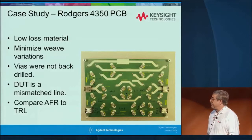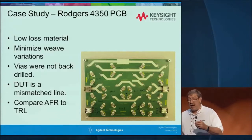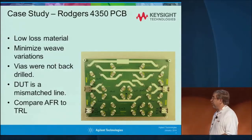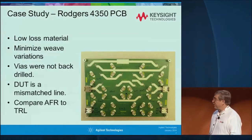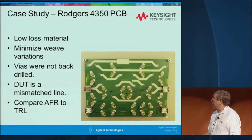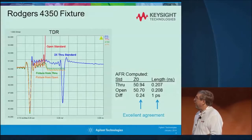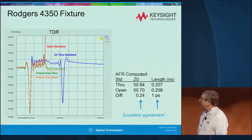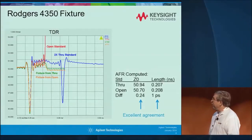Our device under test was a mismatched line. We had a TRL cal kit on here — both a single-ended TRL cal kit and a differential cal kit — so we're able to do comparisons to show how accurate AFR was to TRL. This was the original 2x through method, about five years ago. I went back to use this same board with the one-port, just using the reflection on there. Looking at the fixture models generated based on the through versus based on the open, the difference in impedance is about a quarter of an ohm and the length difference is about one picosecond — very good correlation between the two.